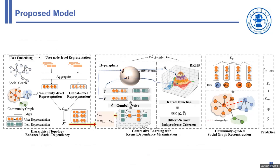To capture hierarchical social dependency, we propose a hierarchical mutual information maximization approach that maximizes mutual information from the user level to the community level, and from the community level to the global level, thereby preserving the underlying learning structure.